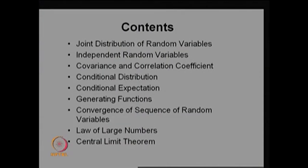In this lecture we are going to give a brief about what is joint distribution, and if the random variables are independent, what is the behaviour of the joint distribution. Then we are going to discuss covariance and correlation coefficients, followed by conditional distribution and conditional expectation.